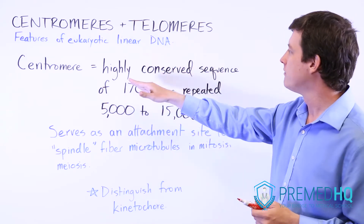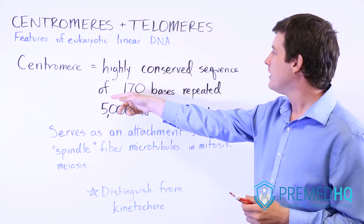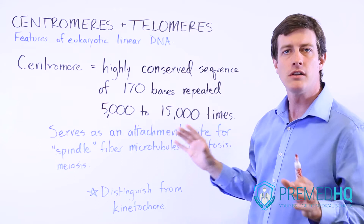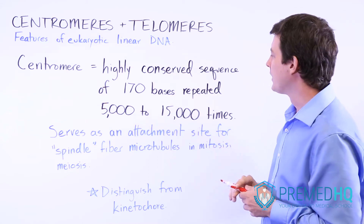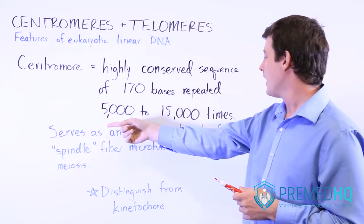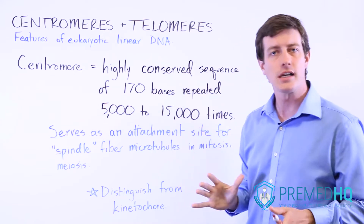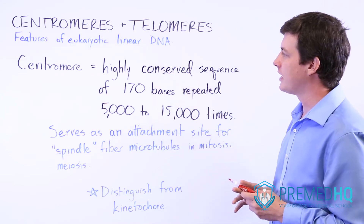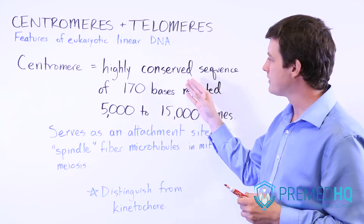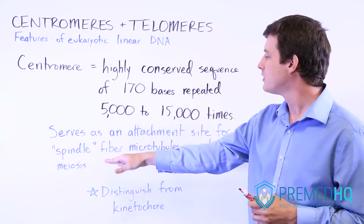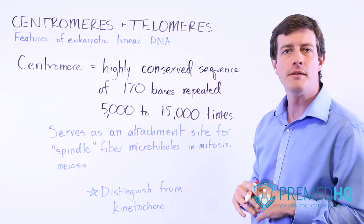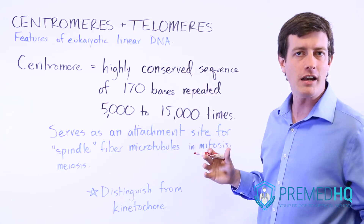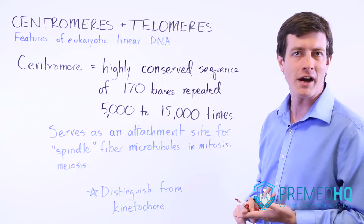Centromeres are something that are very highly conserved. There is a 170 base pair sequence in the middle of a chromosome, and this can be repeated 5,000 to 15,000 times depending on the organism. The centromere is a highly conserved sequence that serves as an attachment site for your spindle fibers, which are the microtubules that emerge when the cells are dividing during mitosis or meiosis.